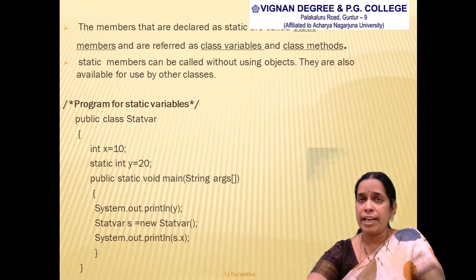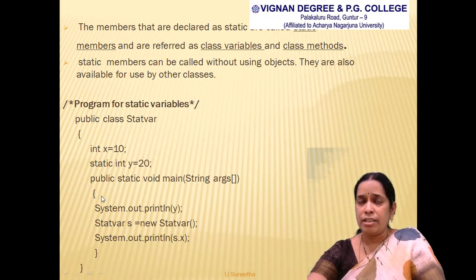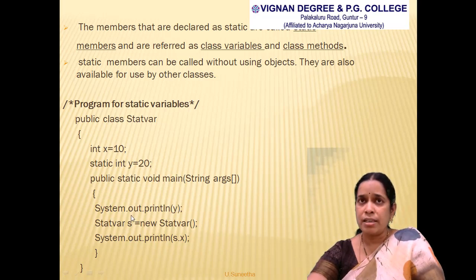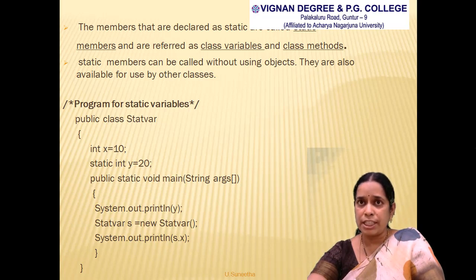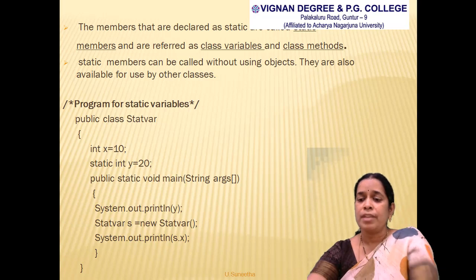Variable 'y' is a static variable holding value 20. Since it is static, it belongs to the class and not to any object. In the main method, we print 'y' directly without any object: System.out.println(y). To print 'x', we create an object 's' and write System.out.println(s.x), since 'x' is an instance variable requiring object access. The output is 20 on the first line, then 10.